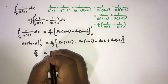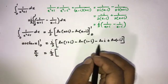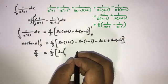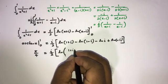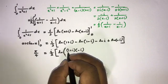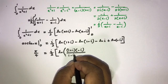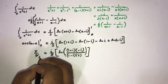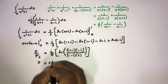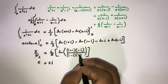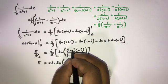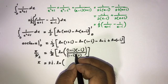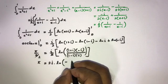Since arctan(1) equals pi over 4, we have pi over 4 equals i over 2 times this expression. Using the property of natural log, we can combine the terms: ln(1 plus i) minus ln(1 minus i) minus ln(i) plus ln(minus i) becomes the natural log of (1 plus i) times (minus i) divided by (1 minus i) times i.